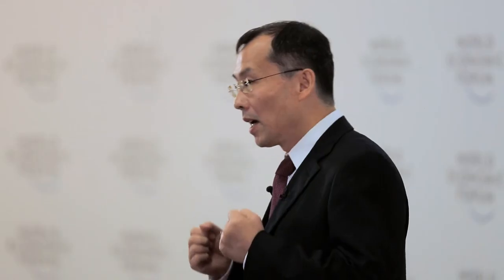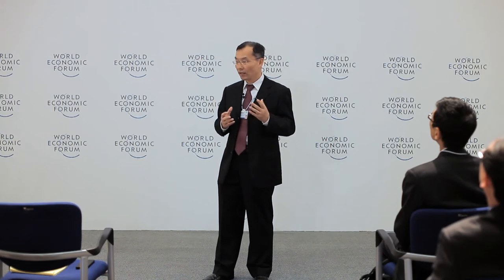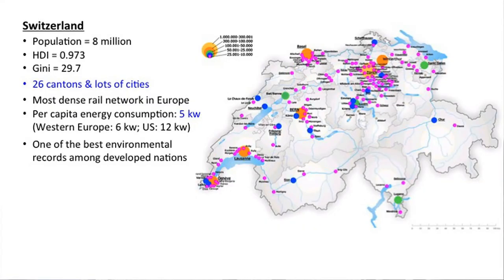Technologies are becoming more scalable and intelligent, giving more possibilities for people to be productive and manage resources responsibly. But for new technology to benefit people, we need innovation — and innovation requires communities that take ownership of their environment and the deployment of technology. Switzerland is an example of a relatively small country with a highly decentralized and diverse urban system, yet with very efficient, inclusive, and environmentally friendly cities.